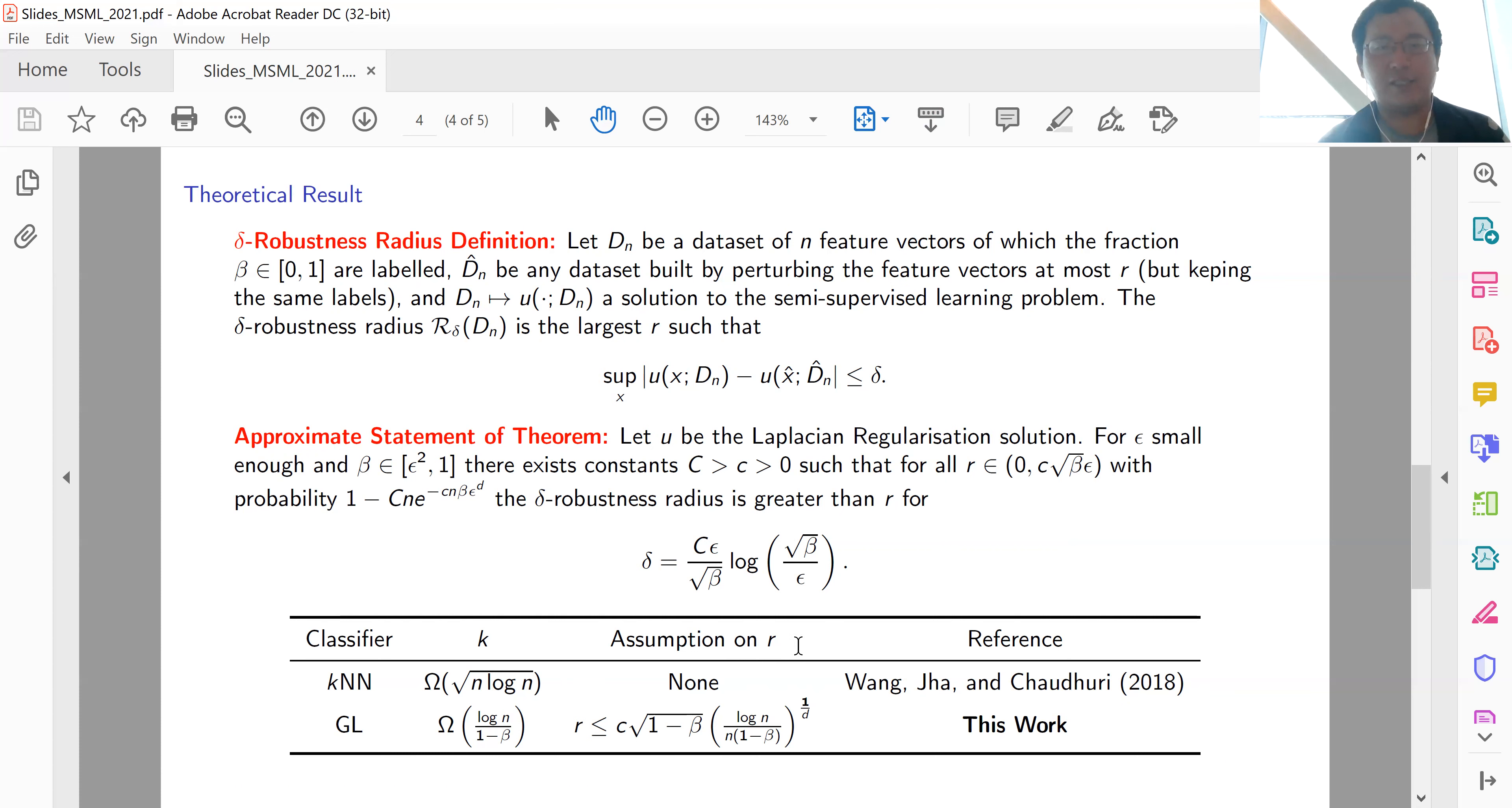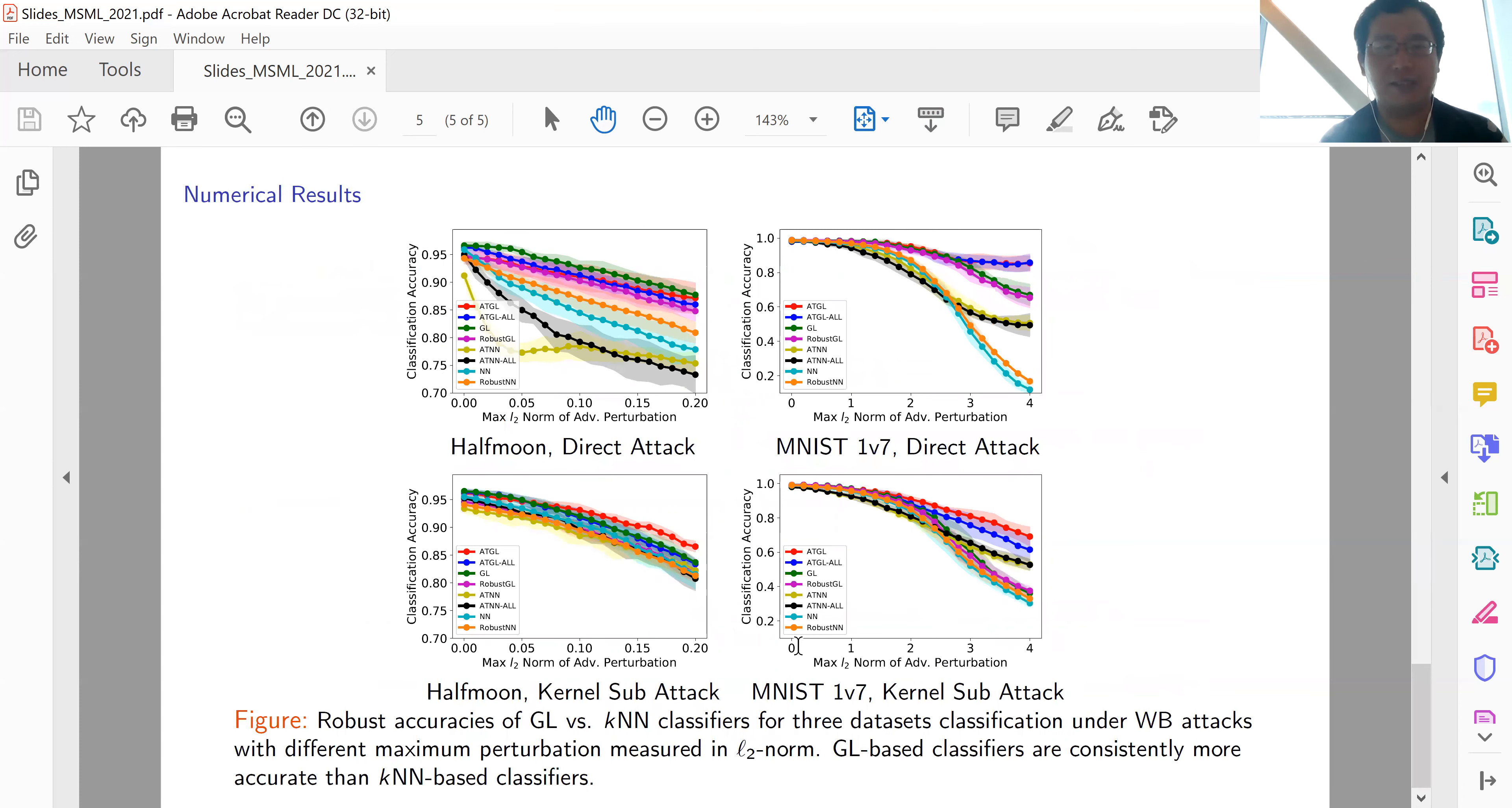Next, we look at the numerical performance. We consider two benchmark datasets: Halfmoon and MNIST. We also consider two attacks: direct attack and kernel substitution attack. In the kernel substitution attack, we attack a kernel method and then use this adversarial example to test the classifier. We see that graph Laplace learning is always more robust than the nearest neighbor approach against different attacks.